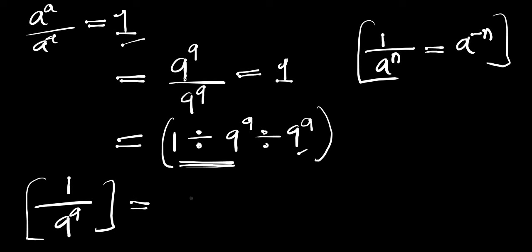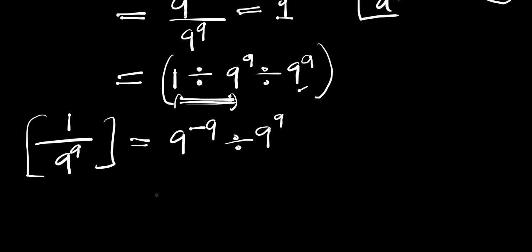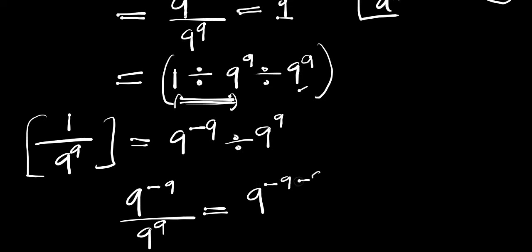We apply this identity right here, and this equals 9 to the power of negative 9. So these first two terms give us 9 to the power of negative 9, and we have divided by 9 to the power of 9. So we go ahead: 9 to the power of negative 9 divided by 9 to the power of 9 equals 9 to the power of negative 9 minus 9, and this equals 9 to the power of negative 18.